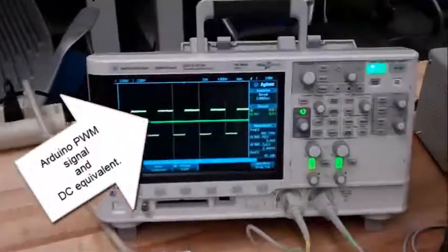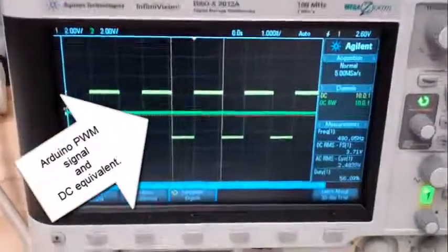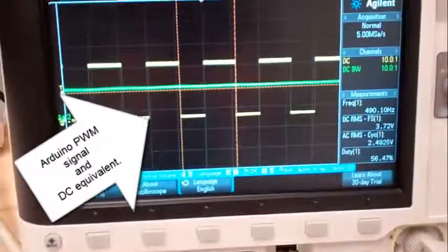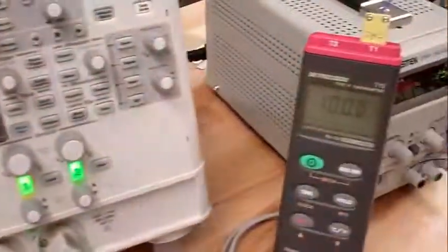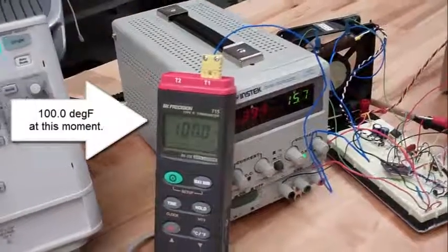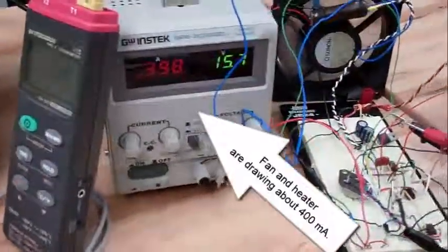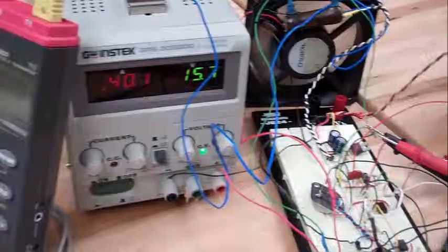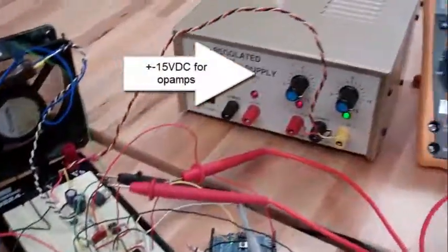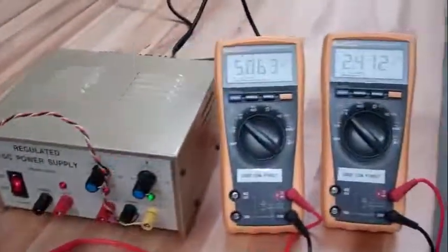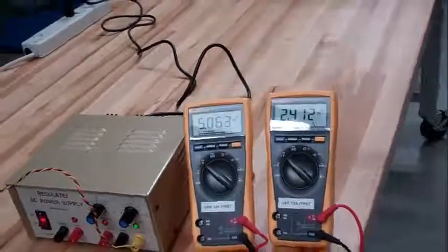There's the Arduino pulse width modulation signal and the DC equivalent in green. 100 degrees exactly at the moment. 400 milliamps to the fan and to the heater. 15 volts DC for the op-amps. Fan driver voltage and Arduino input voltage.